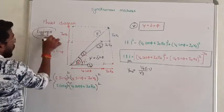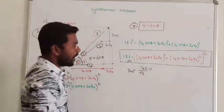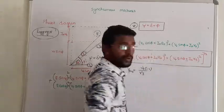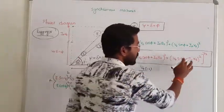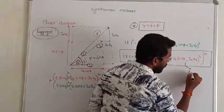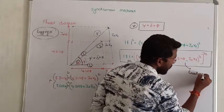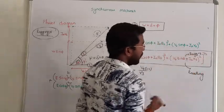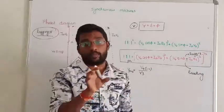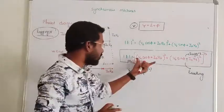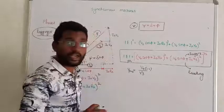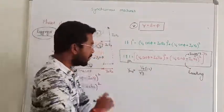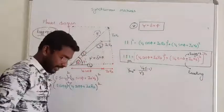Remember one more thing: we have to give the power factor sign carefully. If the leading power factor is given, the sine term becomes minus. So you have to give minus for leading power factor. In case of lagging power factor, you must give plus. So that is the difference between lagging and leading power factor in the EMF equation. For the alternator with leading power factor, after the IaXs term, you use minus; with lagging power factor, you use plus.